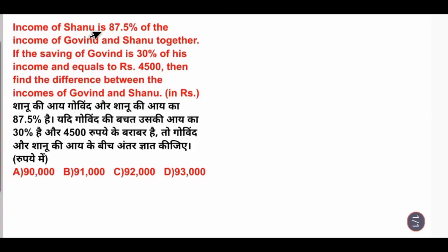Income of Shanu is 87.5% of the income of Govind and Shanu together. The saving of Govind is 30% of his income and equals Rs. 4500. Then find the difference between income of Govind and Shanu.